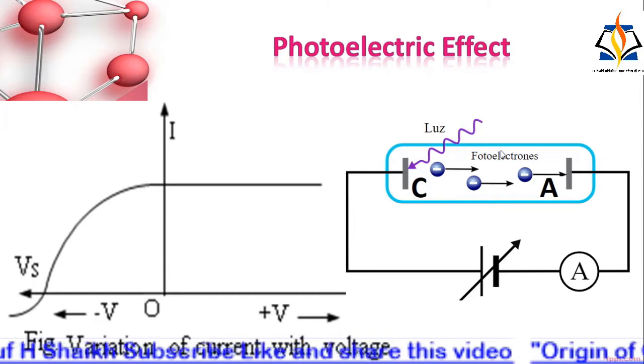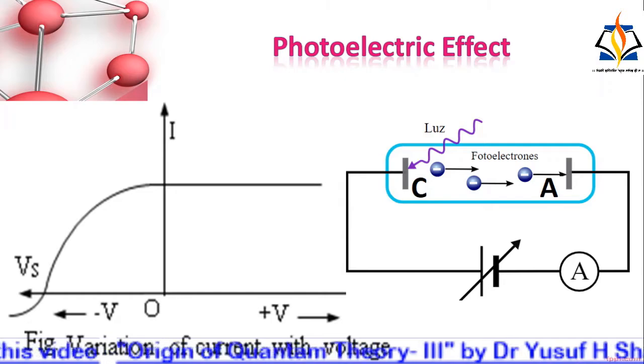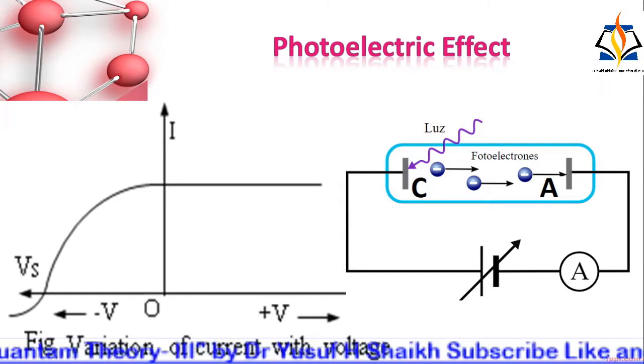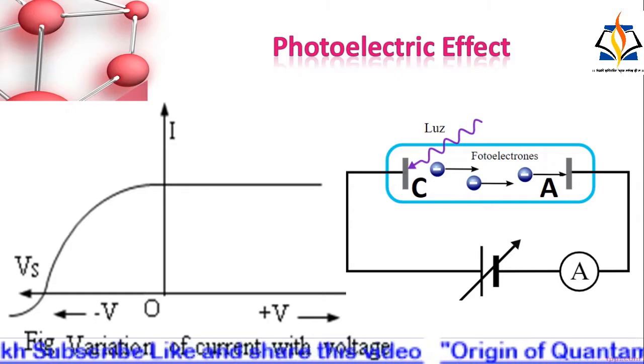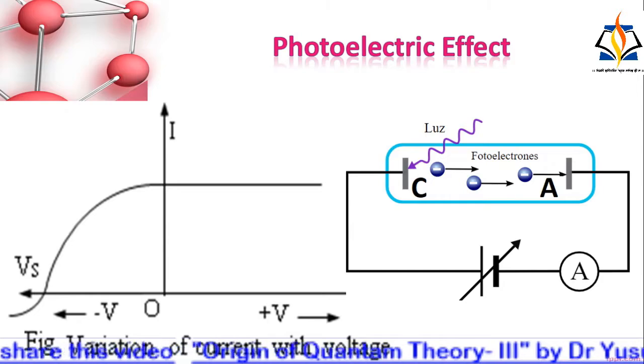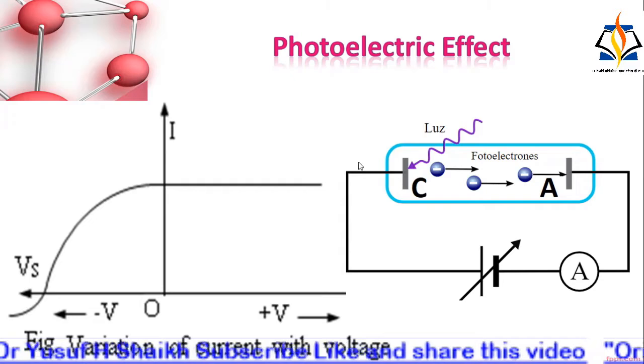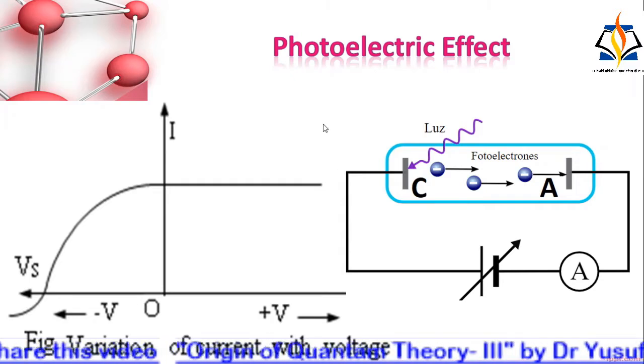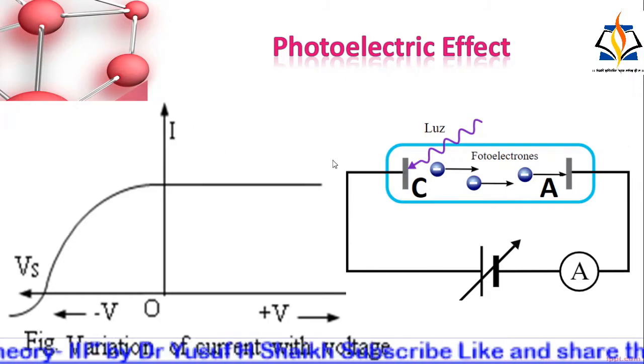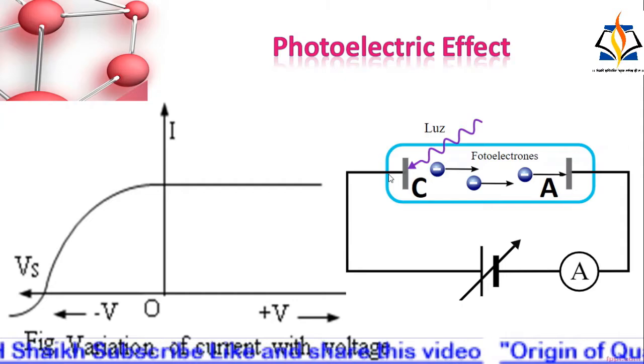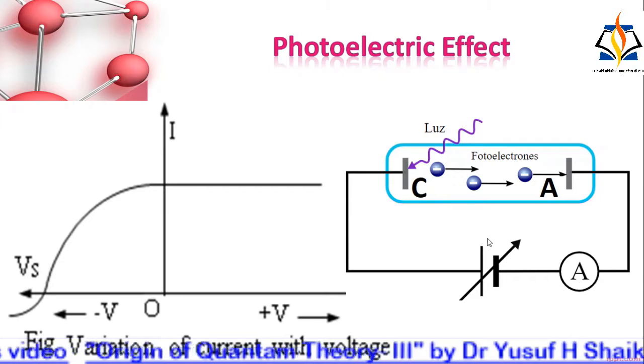If the plate C is kept at a slightly negative potential, there is a decrease in photoelectric current. At a certain reverse voltage, the current is zero, and Vs is known as cutoff voltage or stopping potential. When the intensity of incident radiation is increased, the current increases implying greater emission of photoelectrons. The value of cutoff voltage remains the same.